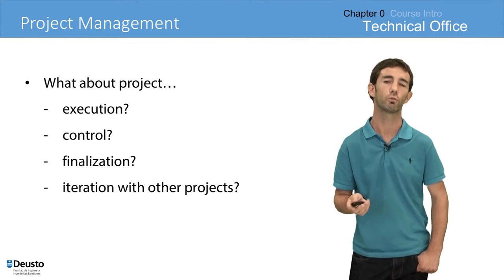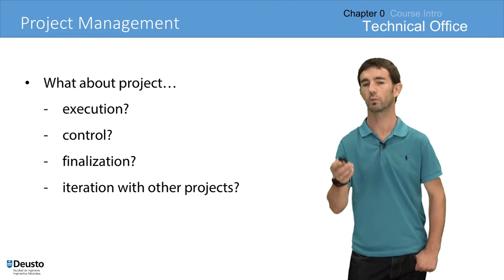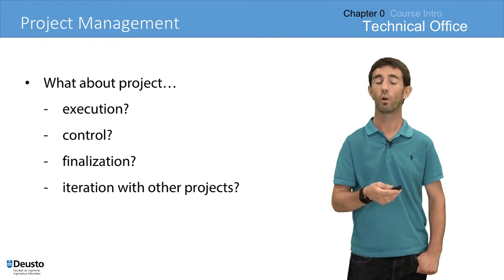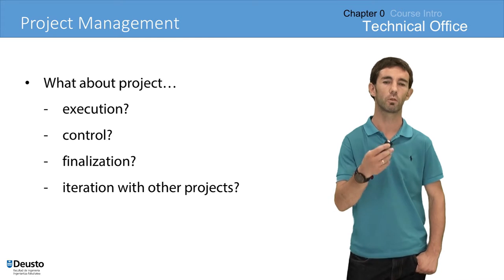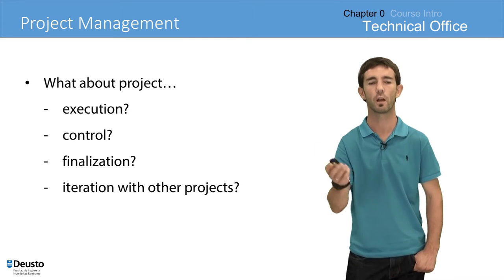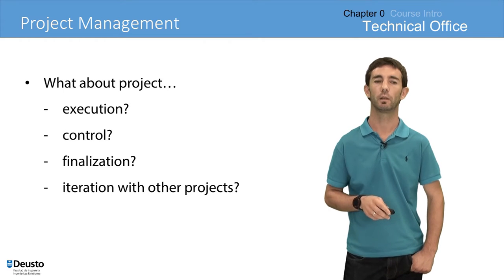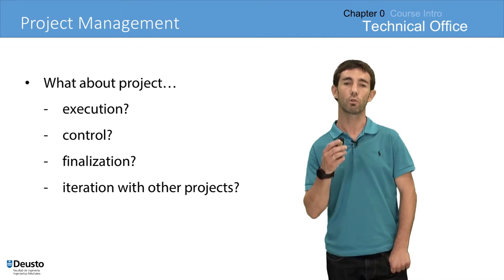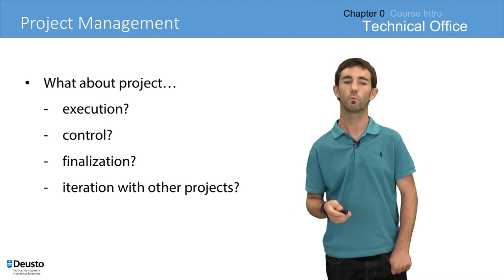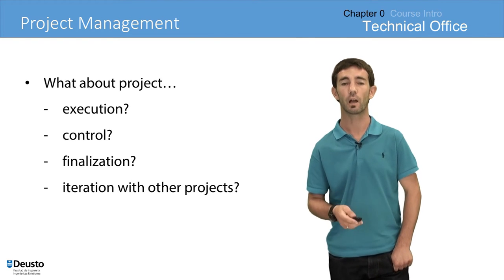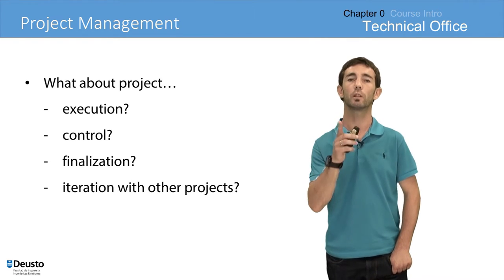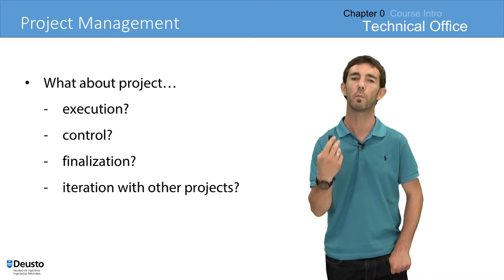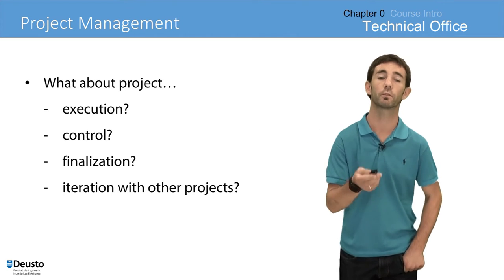But what happens with the execution? We won't emphasize execution in our subject. What happens with control? We will briefly talk about control, specifically in the project management software area, but we will not specialize in this area. What about finalization or closure of projects? We will not enter this topic. And we will talk about single project environments — so what happens with the interaction of our project with other projects, the multi-project environment? We will not face it for the moment.